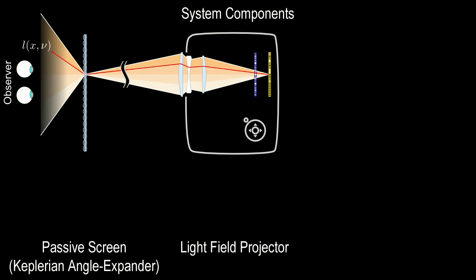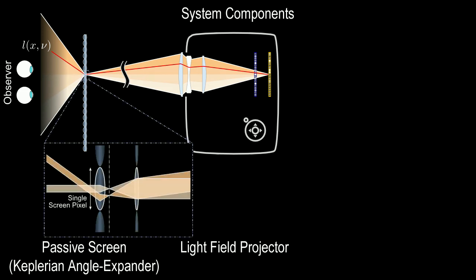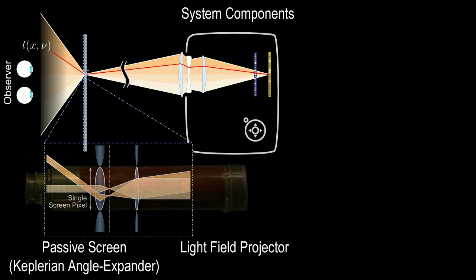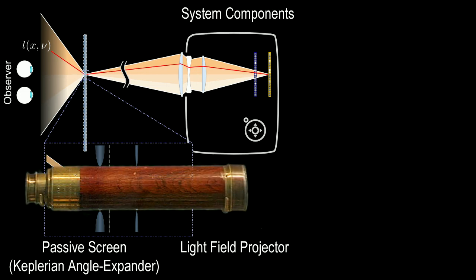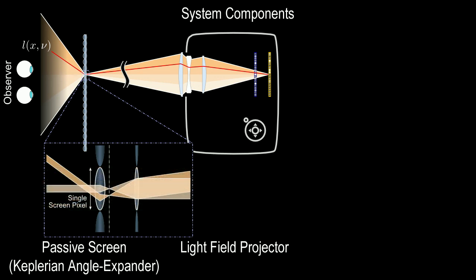This system comprises a light field projector and a passive angle-expanding screen. Angle expansion is a common technique in optics and has been used, for instance, in Keplerian telescopes. Our screen consists of thousands of tiny telescopes, one for each pixel in the projected image. This allows an observer to freely move within a viewing zone on the other side of the screen.